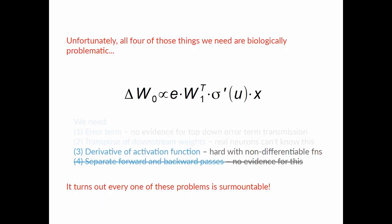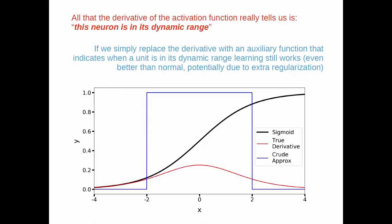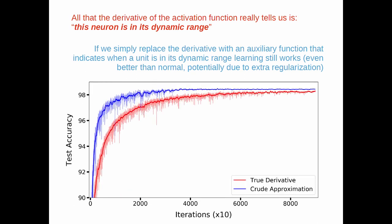So we don't need separate forward and backward passes. What about the derivative of the activation function? Well, all that the derivative of the activation function really tells us is that our units are in the dynamic range. So one of the things that you can do is if you take your activation function, one of the standard ones used in neural networks, traditionally, is this sigmoid function shown in black here. So theoretically, what you need is the true derivative of this function, which is shown in red. But if you discard that derivative from your equation and you just replace it with an auxiliary function that is a very simple kind of indication of whether or not you're in the dynamic range of the units, which I show in blue, learning still works. And in fact, it seems to work better than normal.